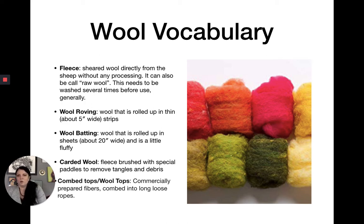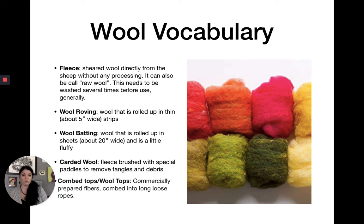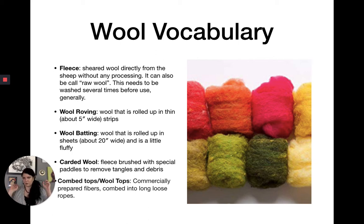Let's go over some vocabulary. Fleece is sheared wool directly from the sheep without any processing, also called raw wool. I use the word fleece interchangeably with wool batting and wool roving, but technically fleece is what you take directly off the sheep. When I say fleece, I'm talking about wool that's been processed enough that we can use it — I don't expect you to go buy a sheep and shear it yourself.